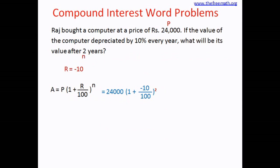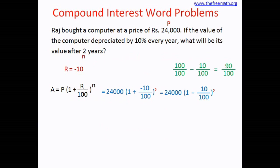Substituting all values, we get 24,000 multiplied by (1 plus negative 10 over 100) to the power of 2. I have written negative 10 because the rate should be negative in this case. 1 plus negative 10 over 100 equals 1 minus 10 over 100. So we have 24,000 times (1 minus 10 over 100) squared. Writing 1 as 100 over 100, we get 100 over 100 minus 10 over 100 equals 90 over 100.